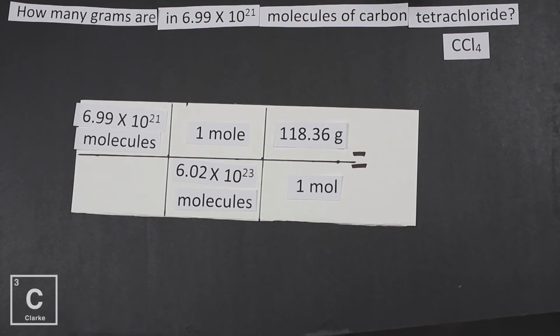So we have our problem set up. Let's talk about how to put it in a calculator. Type the given in first, 6.99 times 10 to the 21st. Since the next number is on bottom we're going to press divide. Divide 6.02 times 10 to the 23rd. And then since the next number is on top we're going to multiply 118.36. When we put that in the calculator we need to round to three sig figs. And so our final answer is 1.37 grams of carbon tetrachloride.